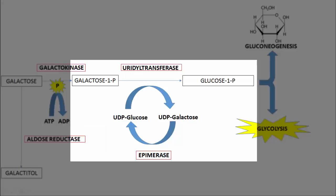The second step occurs inside the cell and involves conversion of galactose-1-phosphate to glucose-1-phosphate through the enzyme uridyl transferase. This step is also dependent on the activity of another enzyme, epimerase, which converts UDP-galactose to UDP-glucose. However, epimerase isn't often implicated in disease, so for the purposes of Step 1 it's not necessarily something we need to memorize.